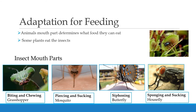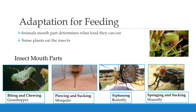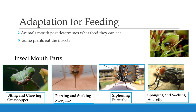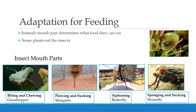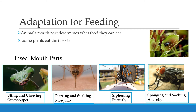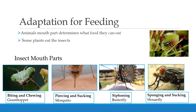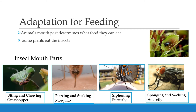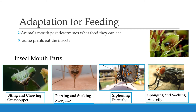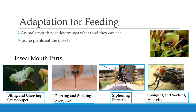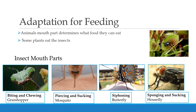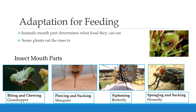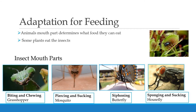The second type is piercing and sucking — that's a mosquito. I'm sure many of you have seen a mosquito. It pierces into the skin and sucks the blood. The third type is siphoning, and the example for it is a butterfly.